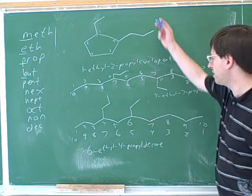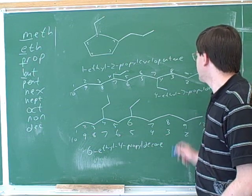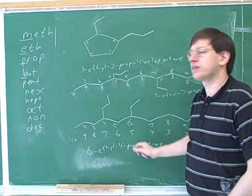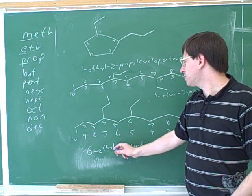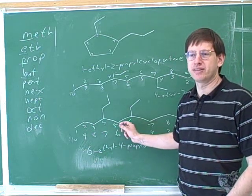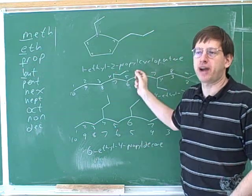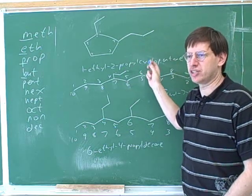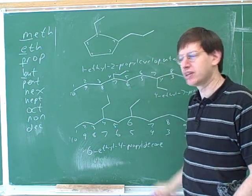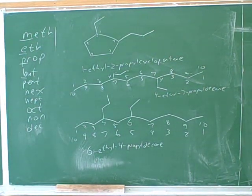Now the key thing to notice here is to compare these three cases. In all three cases, we used alphabetization to decide what order to list the substituents. But in the first case, we did not need alphabetization to decide what direction to number in, because one direction was clearly superior. But in the other cases, neither direction was clearly superior — there was a tie — and we also had to use alphabetization to decide in what direction to number. So there's one thing that we always use alphabetization for, and there's one thing that we rarely use it for.